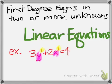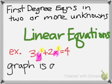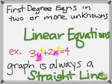there's an x and a y. So this is called a first degree equation in two unknowns. If we graph something like this, it's always going to be a straight line. A first degree equation in two or more unknowns.